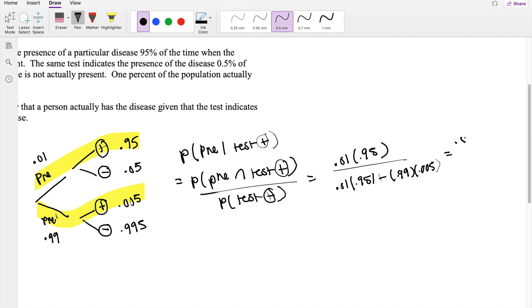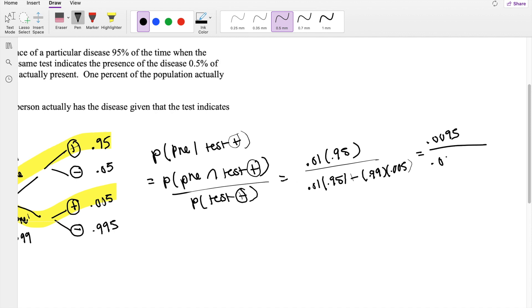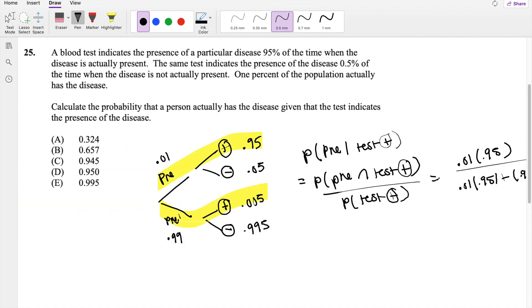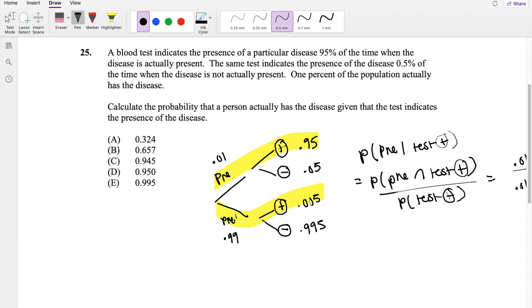So this is equal to 0.0095 divided by 0.01445, which is approximately equal to 0.657, which is our answer B.